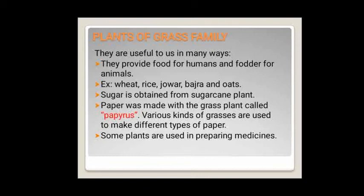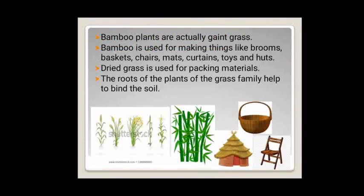Some plants are used in preparing medicines also. Bamboo plants are actually called giant grass. Bamboo is used for making things like brooms, baskets, chairs, mats, curtains, toys and huts. Dried grass is used for packing materials. The roots of plants of the grass family help to bind the soil and they prevent soil erosion.